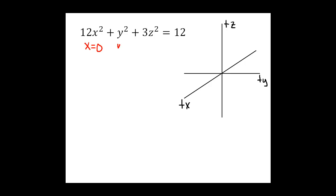So we'll plug in x = 0 and we'll get y² + 3z² = 12. We'll recognize that as the equation of an ellipse. So to get it in standard form, we'll divide through by the constant term. We'll have y²/12 + z²/4 = 1.